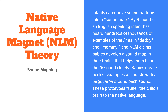The first theory I'd like to look at, that is underpinning the research conducted, is the Native Language Magnet Theory. That stems back to what I was talking about earlier: our students, as well as everyone else, develop a kind of sound map when they are babies by listening to their parents speaking. Infants categorise sound patterns into a sound map. By six months, an English-speaking infant has heard hundreds of thousands of examples of sounds like the 'E' in 'daddy' and 'mummy'. Native Language Magnet Theory claims babies develop a sound map in their brains that helps them hear sounds clearly. Babies create perfect examples of sounds with a target area around each sound, and these prototypes tune the child's brain to the native language.